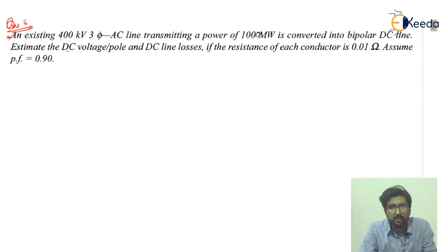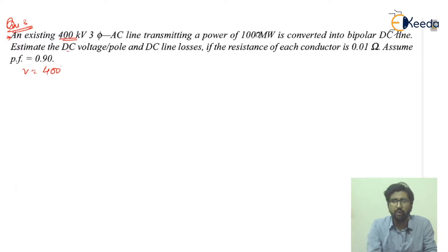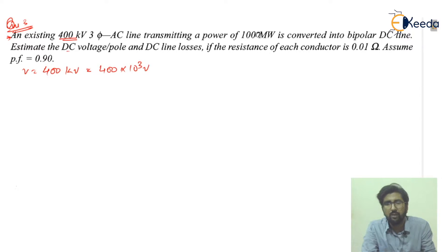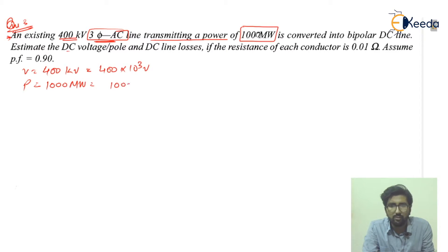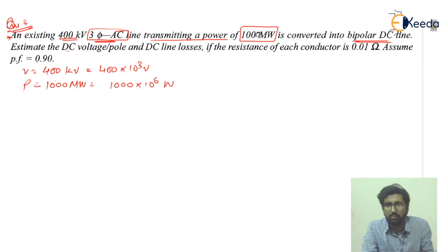The existing voltage is 400 kilovolt, which can be written as 400 into 10 to the power 3 volts. This is a three-phase system transmitting power, and the power value given is 1000 megawatt — that is 10 to the power 6 watts. This AC system is converted to bipolar DC so that the insulation remains the same.